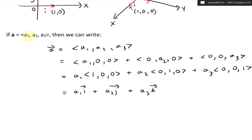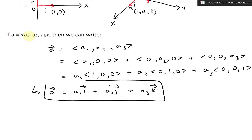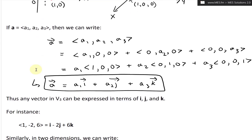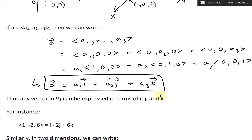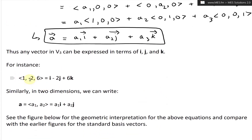So we can write vector a with components (a1, a2, a3) in expanded basis vector form as a1·i + a2·j + a3·k. I'll box this — it's an important equation. Thus, any vector in V3 can be expressed in terms of i, j, and k. For instance, the vector (1, -2, 6) can be written as i minus 2j plus 6k.